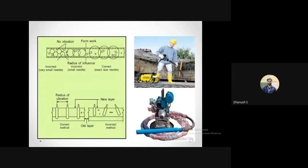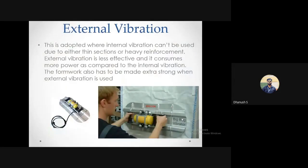Over-compacting with a needle vibrator by placing it in one spot too long causes damage — it forces water to separate from the cement paste and rise to the surface. Compaction must be done in a controlled manner: under-compaction leaves voids and reduces strength; over-compaction causes segregation and bleeding, also reducing strength. It must be done to the right amount to effectively remove voids without causing segregation or bleeding.